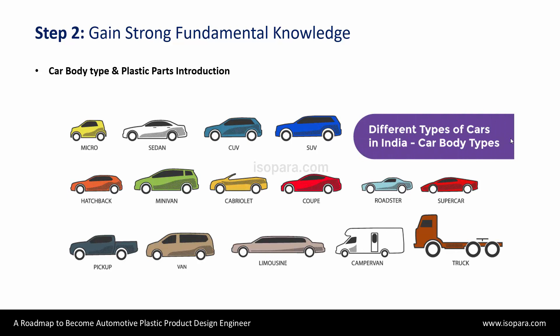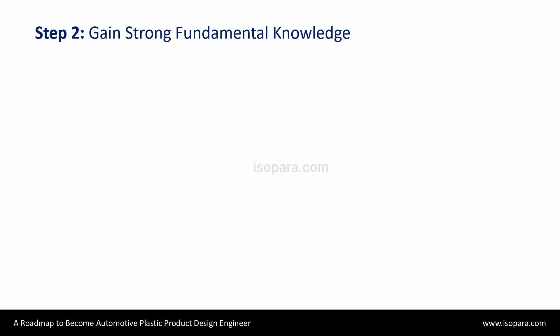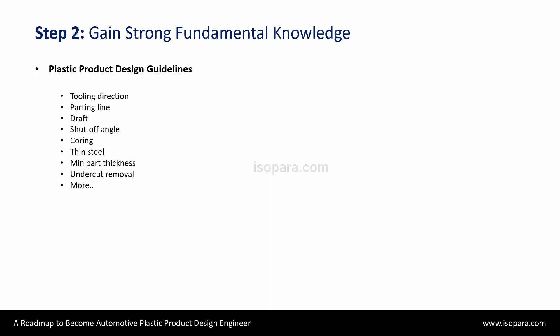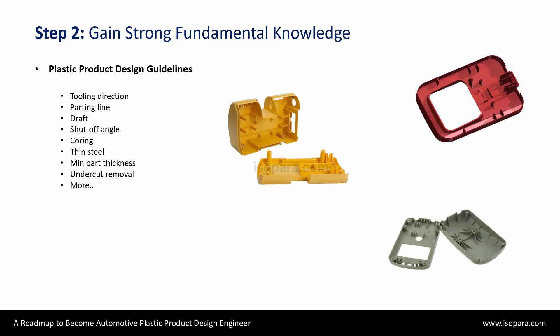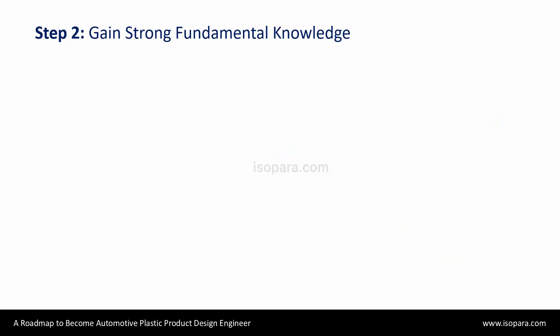Moving towards automotive plastic product design, you should be able to understand what the plastic product design guidelines are. You have to be familiar and well-versed with the tooling direction, parting line, draft angle, shut-off angle, coring, minimum part thickness, undercut removal, and many more. You should also be able to understand what is class A surface, what is B surface, what is a closed volume, and how and why we are doing so.